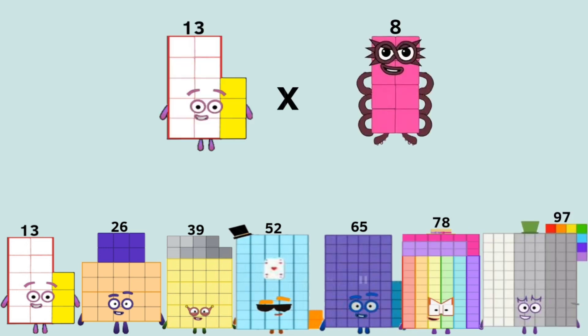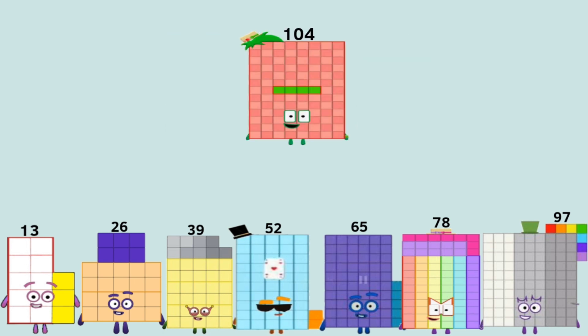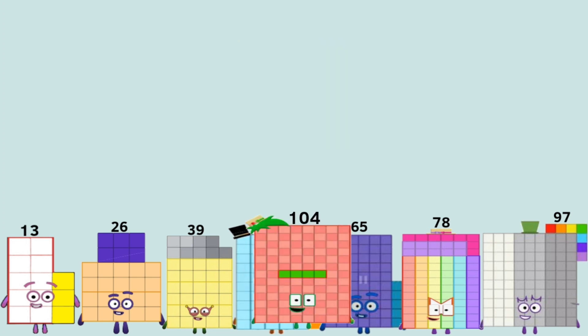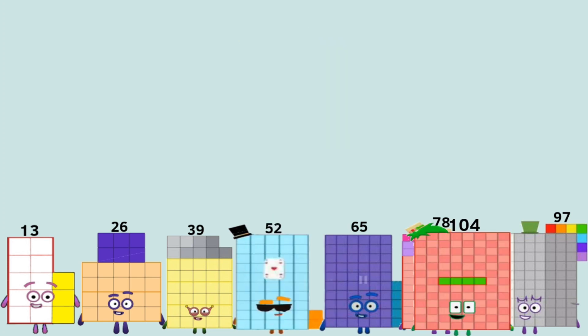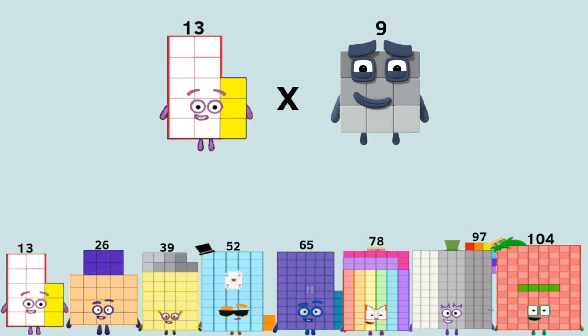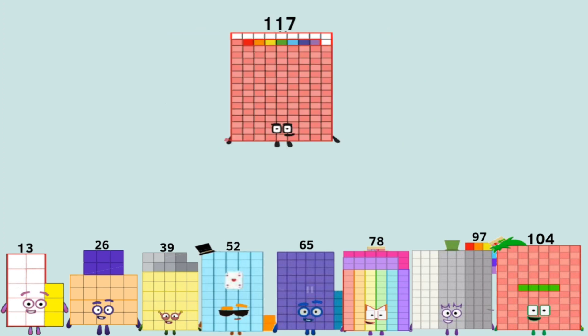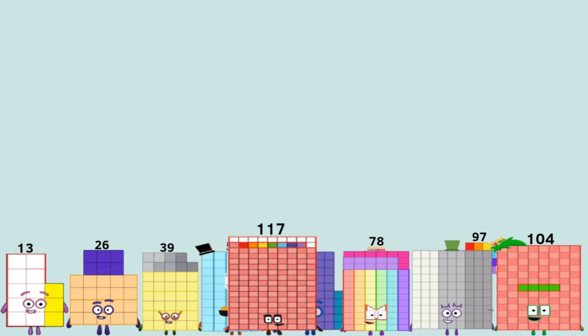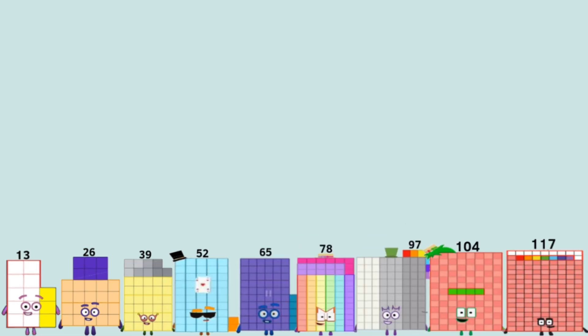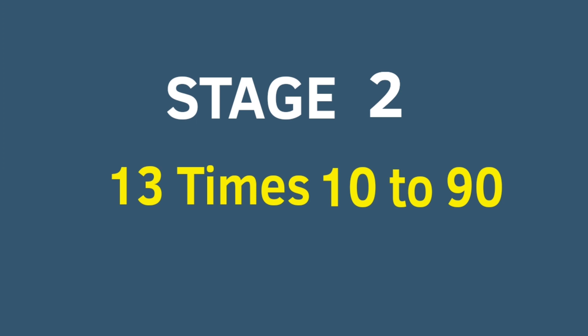Thirteen times eight equals one hundred four. Thirteen times nine equals one hundred seven. Stage 2.